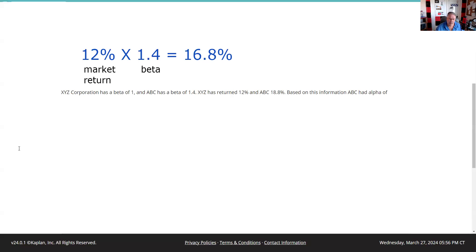We take the market return, we times it by the beta and we get 16.8%. That would be our expected return. However, we got 18.8%. And so the answer to this question is we had alpha of 2%. Pretty straightforward.